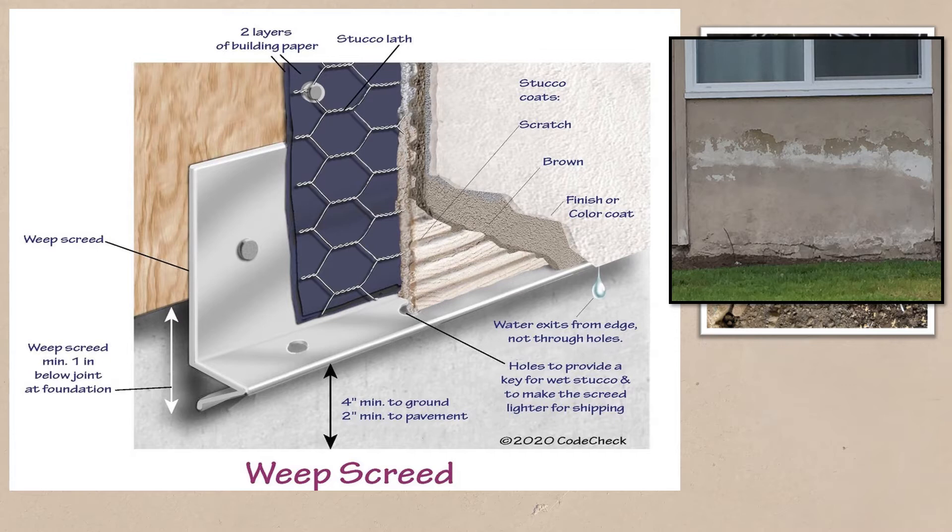The weep screed was so successful it became part of the building code in 1970. While it may not be critical to a successful stucco installation, the weep screed is required by code for stucco on framed walls.